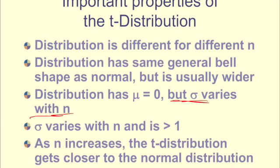So as n increases, the t-distribution gets closer and closer to the normal distribution. That's why we need a sample size of greater than 30. That's when it starts to get pretty close to the normal distribution.